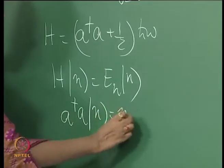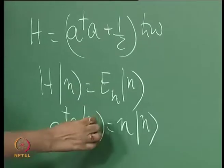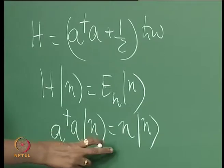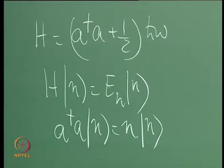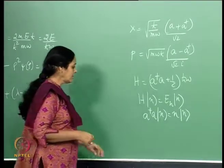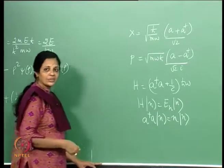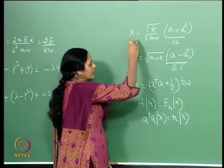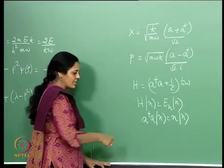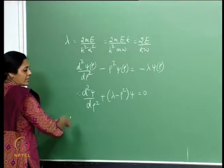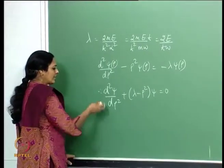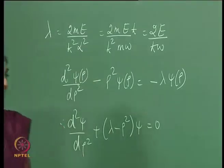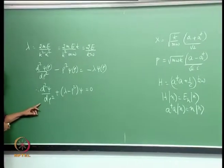We have a†a|n⟩ = n|n⟩, where E_n = (n + ½)ℏω and n is an integer. This equation in the abstract operator method was written in terms of dimensionless quantities—a and a† are dimensionless, and ℏω is scaled out. The analogue in the position representation is precisely d²ψ/dρ² + (λ - ρ²)ψ = 0, written with dimensionless variables ρ and λ.